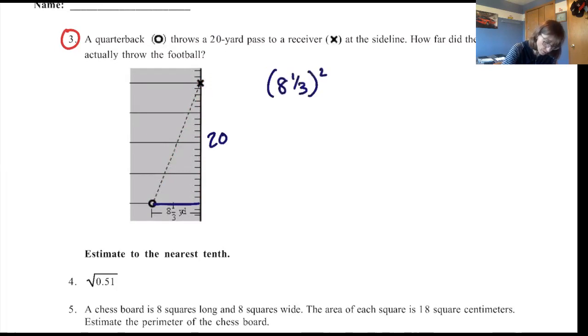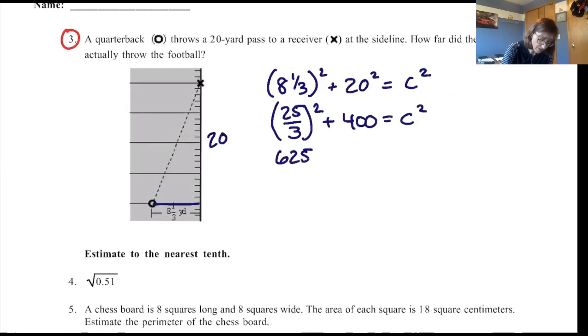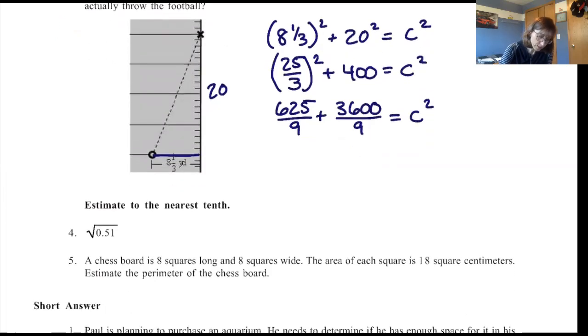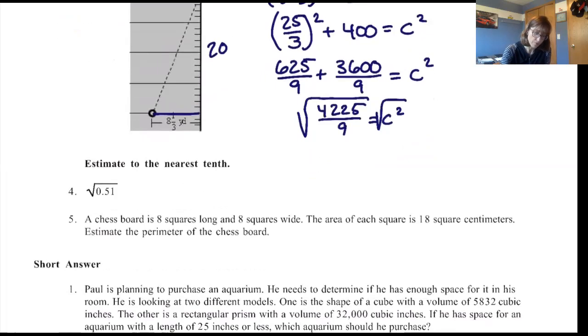So we're going to use our Pythagorean theorem. So 8⅓² + 20² = c². And so I'm going to make an improper fraction. By the way, on the test this is all I want to see, all of this work. Please write your equations out for me. Okay, 8⅓ is really 25/3, and we need to square that. And then 20² of course is 400, and that equals c². So when I square this out, this is going to be 625/9, plus, well, I'm going to have to add fractions, so I better get a common denominator. This is 3600/9, and that's what c² is.